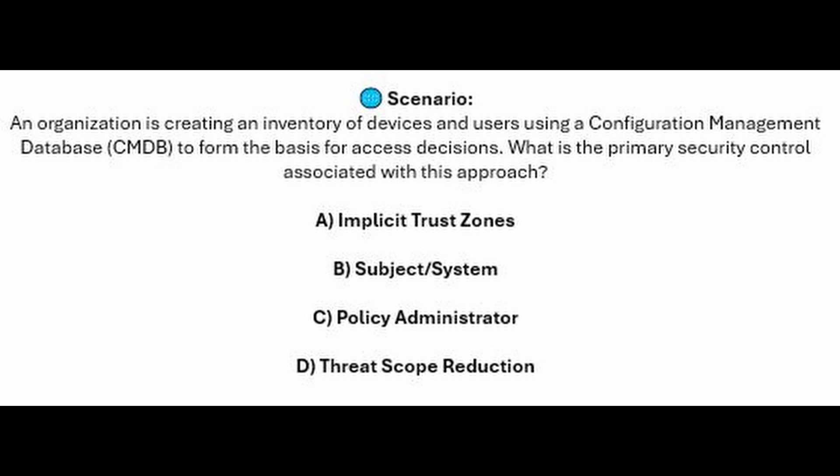Is it A. Implicit Trust Zones? Is it B. Subject/System? Is it C. Policy Administrator? Or is it D. Threat Scope Reduction?